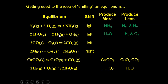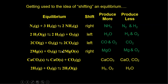A couple more examples: shifting to the left means producing more of anything on the left side of the arrow, and less of what's on the right. Shifting this next equation to the right means making more MgO and producing less MgO2. Shifting right produces products; shifting left produces more reactants.